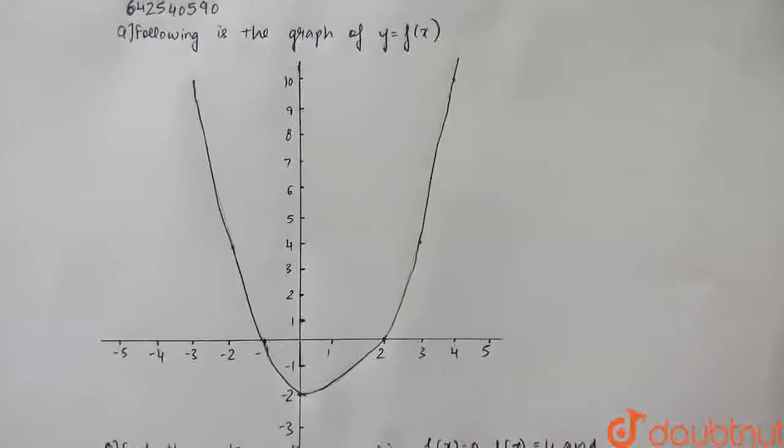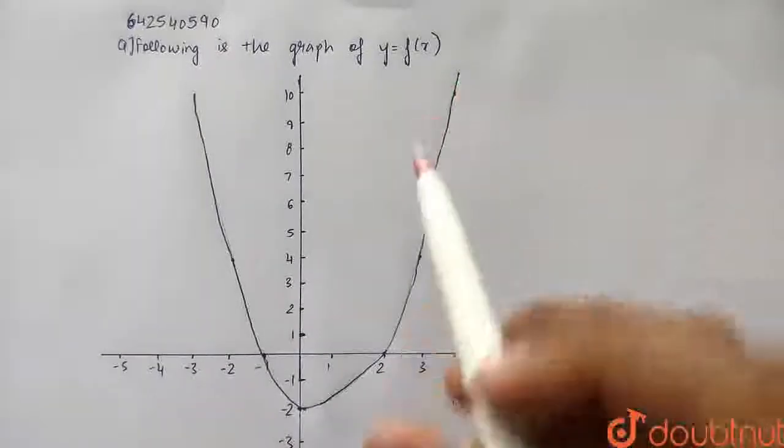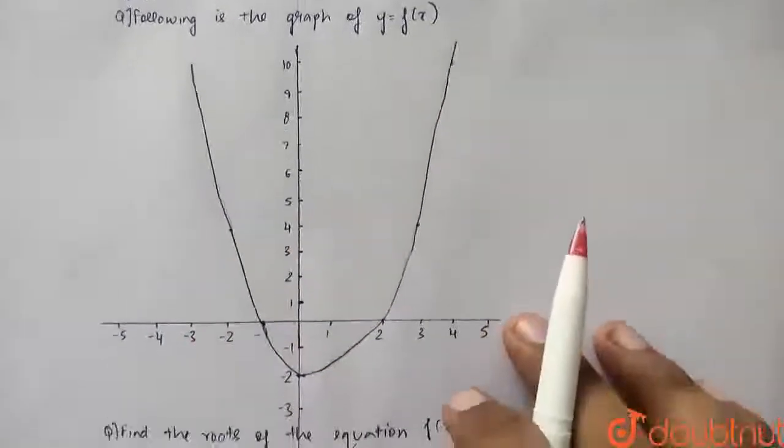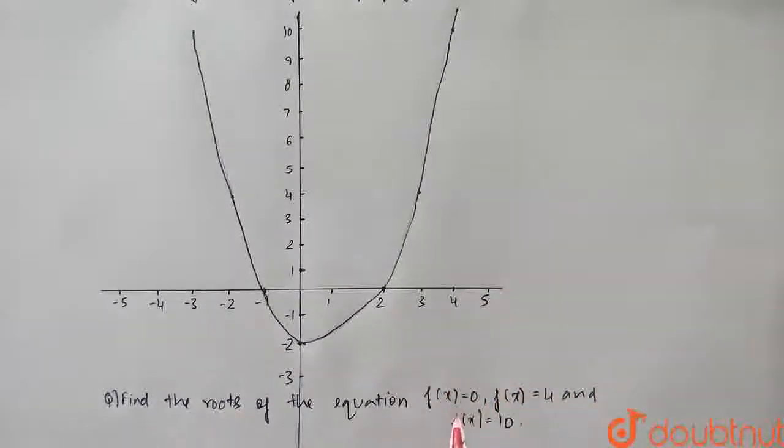Hello students, so the question for today is, following is the graph which is given for y is equal to f of x. So this is the graph which is given and what we have to find? So we have to find the roots of the equation f of x is equal to 0, f of x is equal to 4 and f of x is equal to 10.